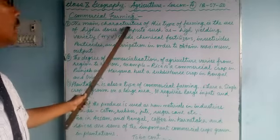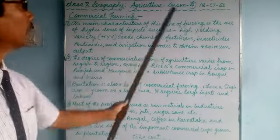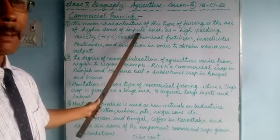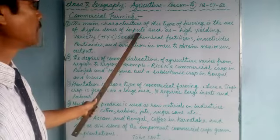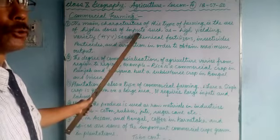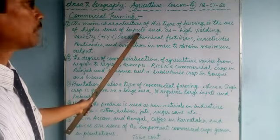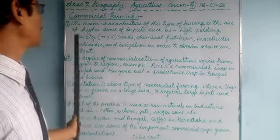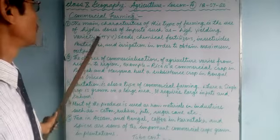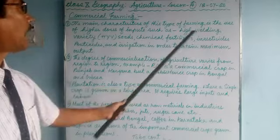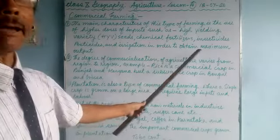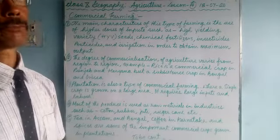The main characteristic of commercial farming is the use of higher doses of inputs, such as capital investment — spending more money to buy seeds, fertilizers, land, tools, implements, tractors, and machinery. Inputs include high yielding variety seeds, farming implements, chemical fertilizers, insecticides, pesticides, and irrigation, in order to obtain maximum output on a large area.